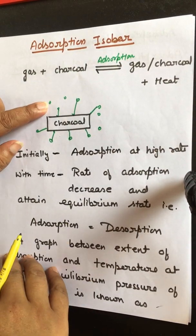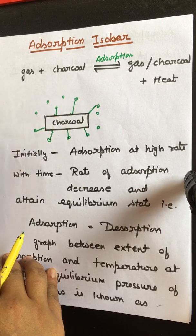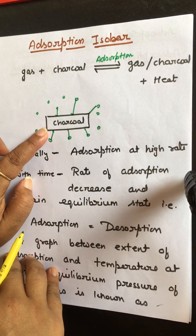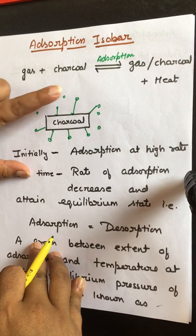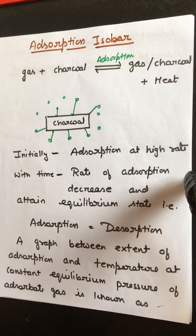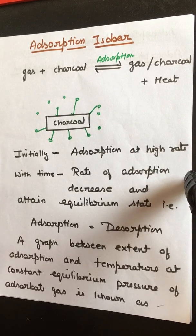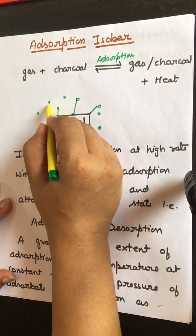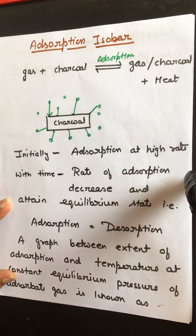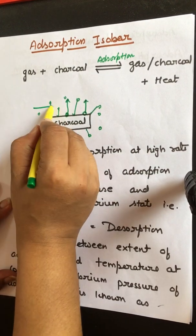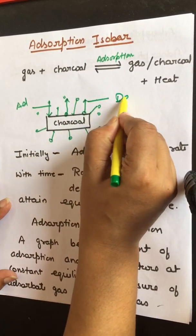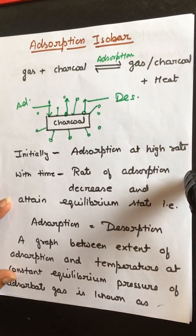Initially the rate of adsorption will be high because there are lots of free valencies or free sites available at the surface of the adsorbent. But as time passes and free sites are occupied by gas particles, the rate of adsorption decreases. Ultimately, an equilibrium state is reached where the rate of adsorption equals the rate of desorption. This is known as equilibrium pressure.